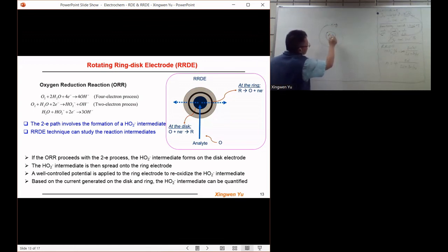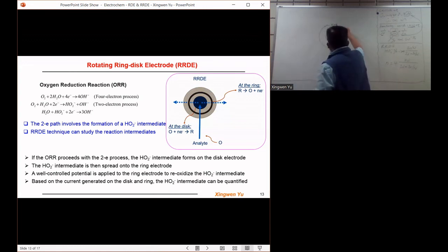On the disk electrode we can apply a potential that can reduce the oxygen. The intermediate species will spread out to the ring electrode. On the ring electrode we can apply a potential that can oxidize the formed intermediate species. We can hold a constant potential there, and then the intermediate species on the ring electrode will be re-oxidized to the original oxygen.